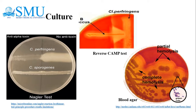The Nagler test is also positive for Clostridium bifermentans. In the reverse CAMP test, Clostridium perfringens is streaked over the center of a blood agar plate and Streptococcus agalactiae is streaked perpendicular to it. The presence of an enhanced arrow-shaped zone of hemolysis pointing towards Clostridium perfringens indicates a positive test. In heat tolerance testing, Clostridium perfringens can grow when Robertson's cooked meat broth is incubated at 45°C for 6 hours, differentiating it from other organisms.